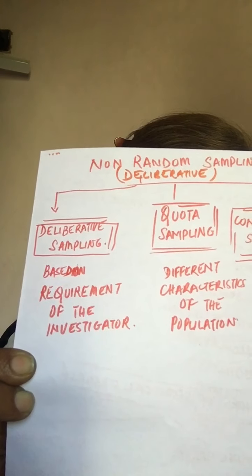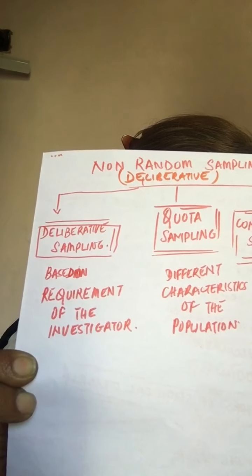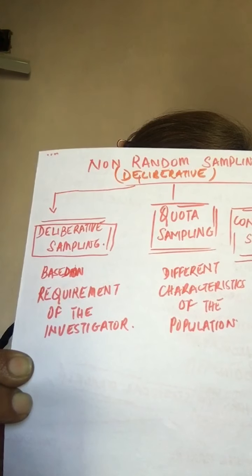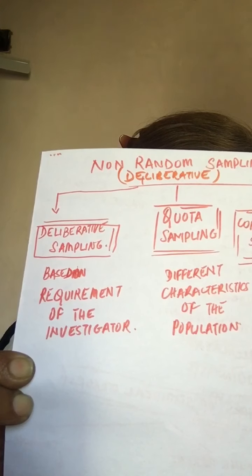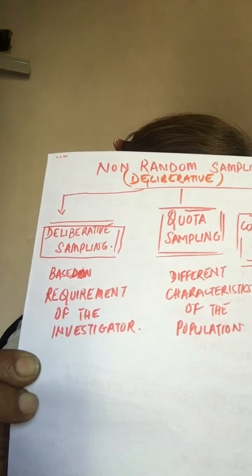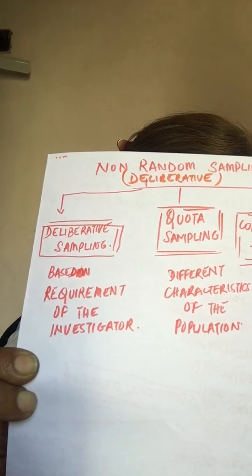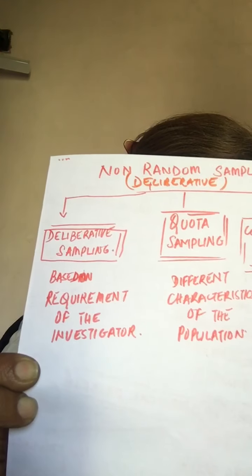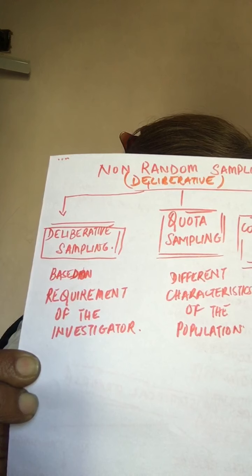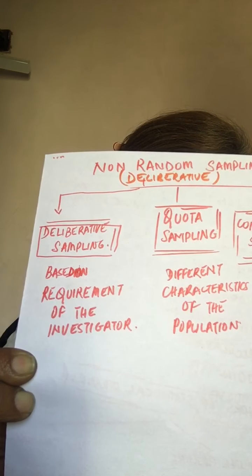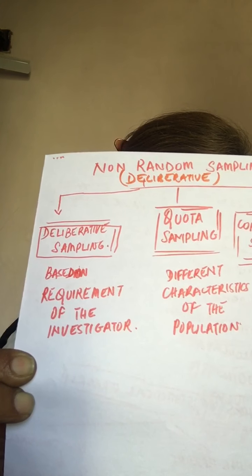This method is very simple. It is more suitable in fields of inquiry where some items are so important to be included in the sample. This method is also of great significance when all units of the universe are not homogeneous.